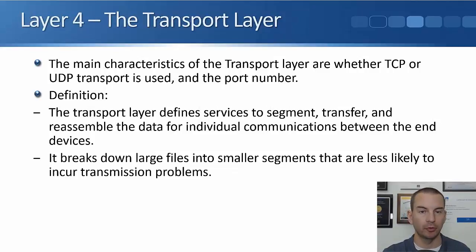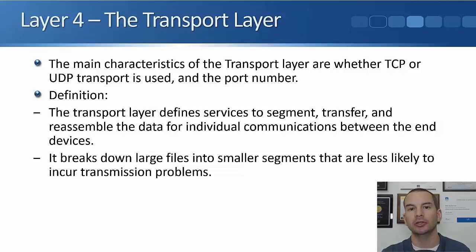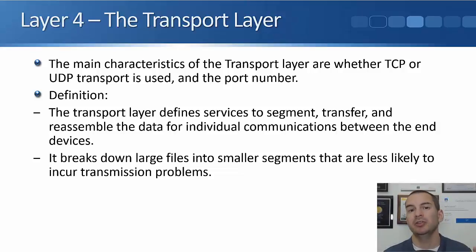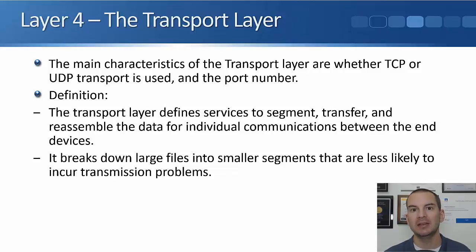The first of the bottom four layers, we'll start with layer four, which is the transport layer. The main characteristics of this layer are whether TCP or UDP transport is going to be used and the port number. If you don't know anything about TCP or UDP or port numbers already, don't worry about it too much for now because we're going to be covering this in the dedicated section for layer four later. For now, you just need to know that if we want the communication between the two hosts to be reliable, then we'll use TCP. If speed is more important than reliability, like for voice or video traffic, then we'll use UDP instead.